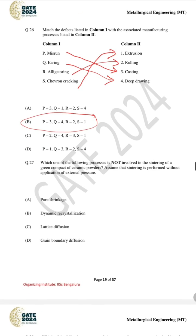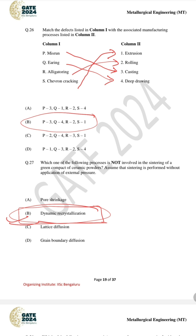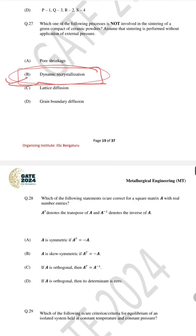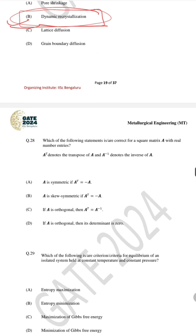For question number 27, which one of the following is not involved in the sintering of green compact of ceramic powder, the correct answer is dynamic recrystallization — this is not involved in the sintering process. For question number 28, which is MSQ, the two correct answers are B and C.